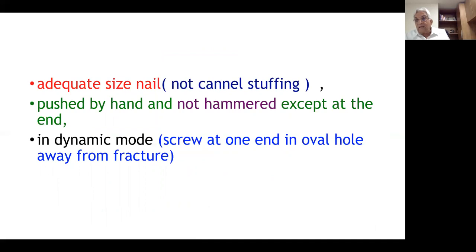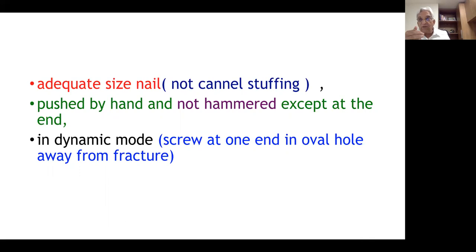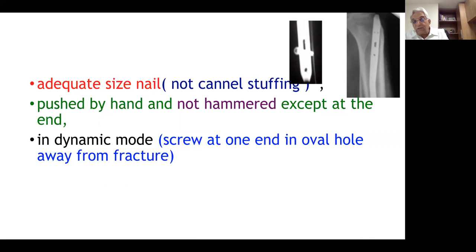For shaft fractures at the isthmus level, use an adequate-size nail — not a canal-stuffing nail — pushed by hand and not hammered except at the end, in a dynamic mode. Put the screw at the end of the oval hole away from the fracture. A common confusion is which hole is the dynamic hole: the oval hole away from the fracture is the dynamic hole. Full weight bearing on day one — forget about the fracture, it will heal up.